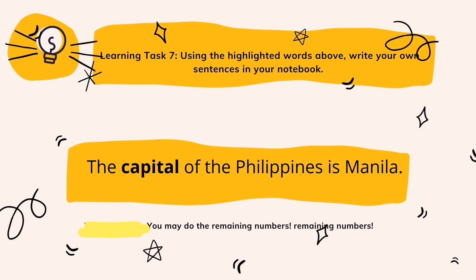For learning task 7, using the highlighted words, write your own sentences. For example, in number 4, the highlighted word is 'capital' and we already know its meaning. Let's make a sentence: 'The capital of the Philippines is Manila.' Provide your own sentence for each highlighted word.